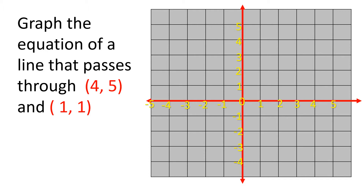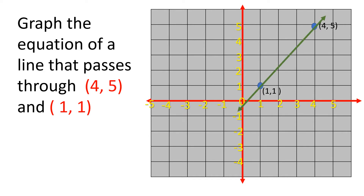How to plot (4, 5)? Of course, that is on the first quadrant because they are both positive — 4 on the x-axis and 5 on the y-axis. Next is (1, 1): 1 on the x-axis and 1 on the y-axis. After plotting the two points, you just simply connect these points.